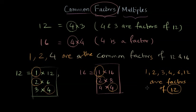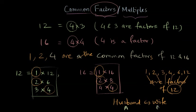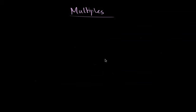Then 12 is a multiple of all those numbers — it's a reverse relationship. Think of it like a husband and wife: if B is the wife of A, then A is the husband of B automatically. That's how the relationship between multiples and factors works. To find multiples of any given number — say 5, 3, and 8 — you just multiply that number by any number you choose, and you get a multiple.